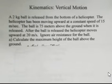In this problem, we're considering kinematics, vertical motion with constant acceleration provided by the acceleration due to gravity of the Earth. We have a 2-kilogram ball attached to the bottom of a helicopter. It's going to be released at a certain point. Before the ball is released, the helicopter is moving upward at a constant speed, 15 meters per second. We could call it a velocity. The ball is 75 meters above the ground when the ball is released.